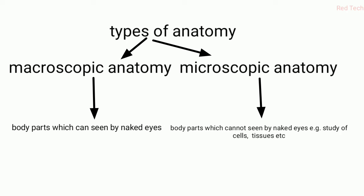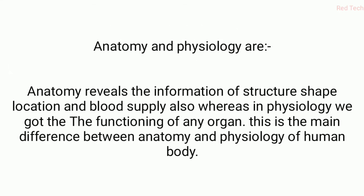Internal body parts come under microscopic anatomy. Macroscopic anatomy covers parts that can be seen by the naked eye — parts you can see and feel, like hands, legs, and other body parts which we encounter in daily life. This is what we study in macroscopic anatomy.